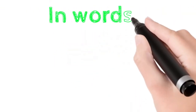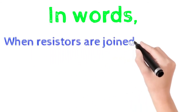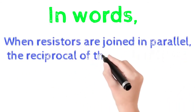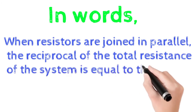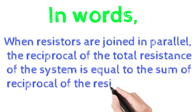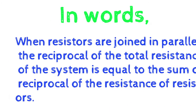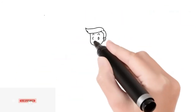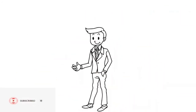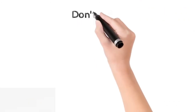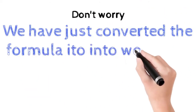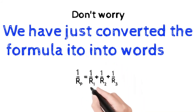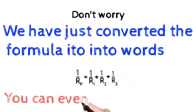In words, when resistors are joined in parallel, the reciprocal of the total resistance of the system is equal to the sum of the reciprocals of the individual resistances. We are just converting the formula into words — you can even try it yourself.